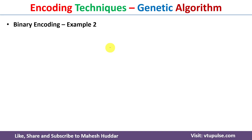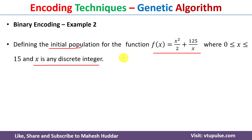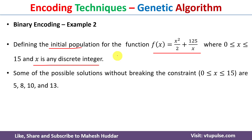Let's consider one more example to understand binary encoding. We want to find the initial population for the function f(x) = x²/2 + 125/x, where x goes from 0 to 15 and x takes discrete integer values. The solution will be anything in the range of 0 to 15. To represent these chromosomes, we can use four binary bits.